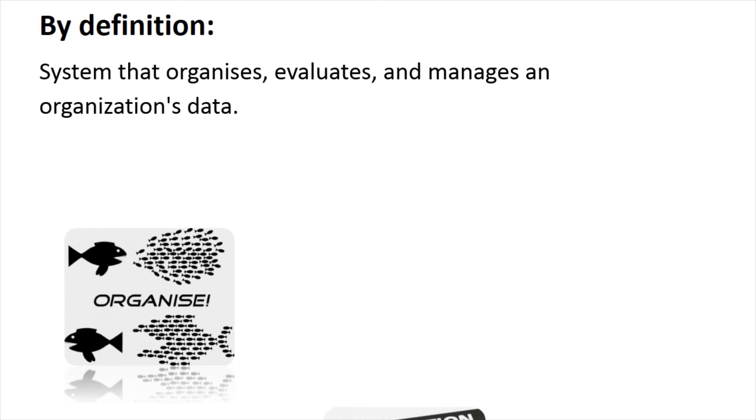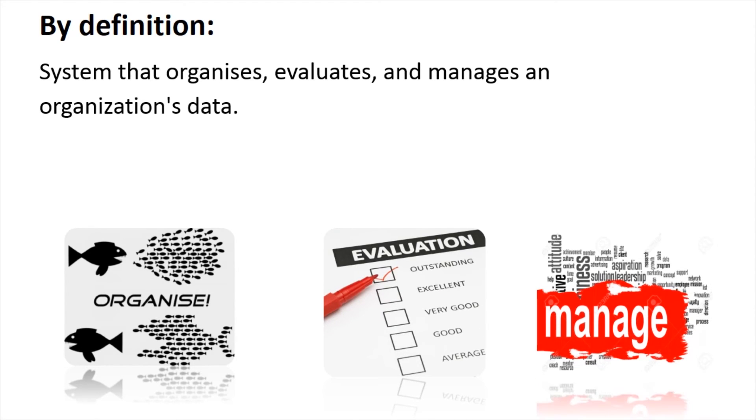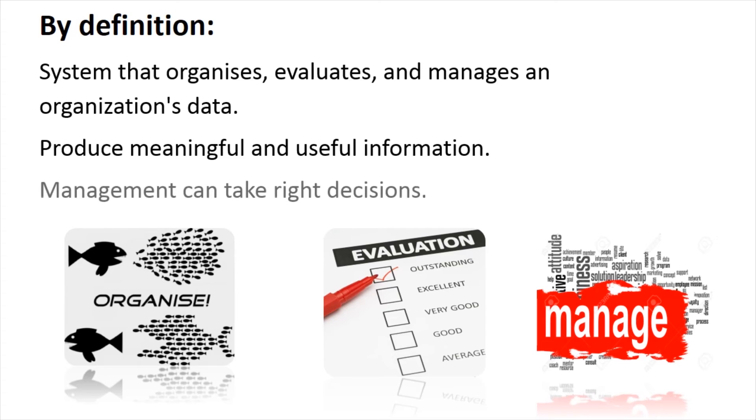Hence, by definition, a management information system is a system that organizes, evaluates, and manages an organization's data to produce meaningful and useful information based on which the management can take right decisions to ensure future growth of the organization.